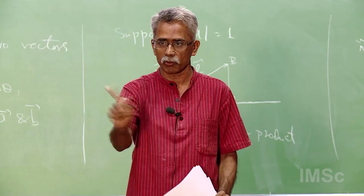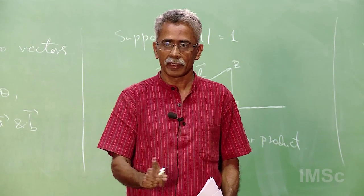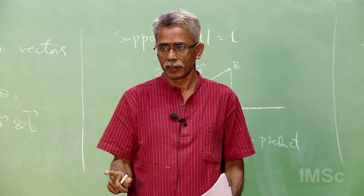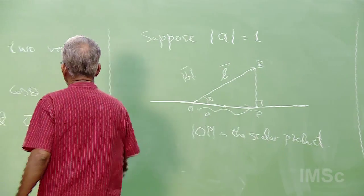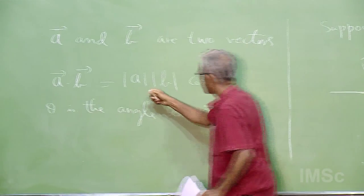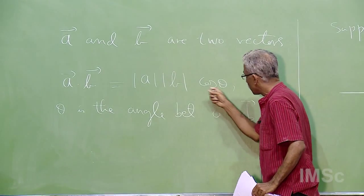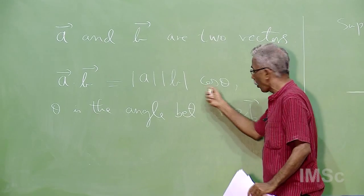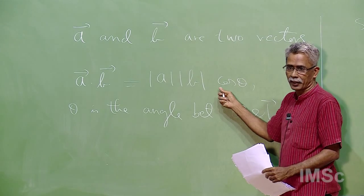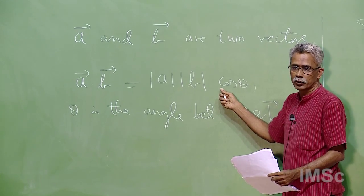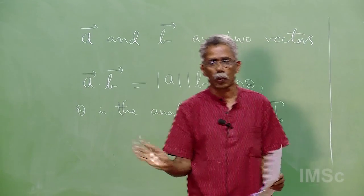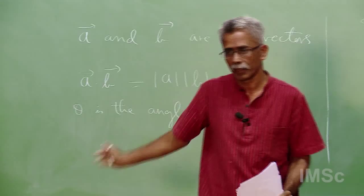The obvious reason is: you would like A dot A to equal the square of the length of A. If A equals B, the angle between A and A is 0, and cos 0 is 1. If you had sin θ or tan θ instead, it would not work out right. You would like A dot A to be the length of A squared — that is why you use cos θ.